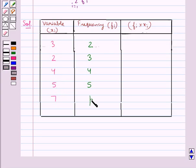Now the product of fi and xi is 6, 6, 16, 25, and 7p.